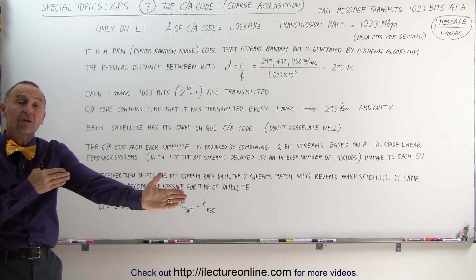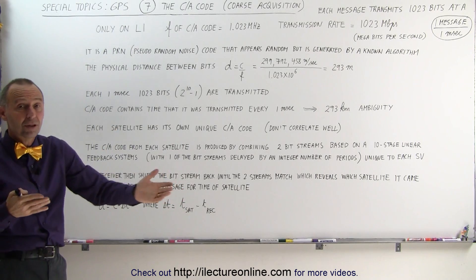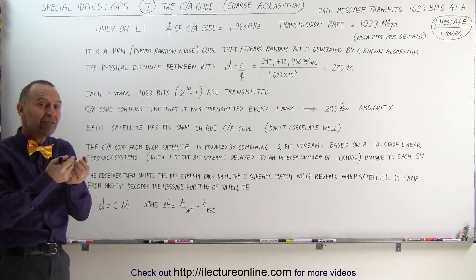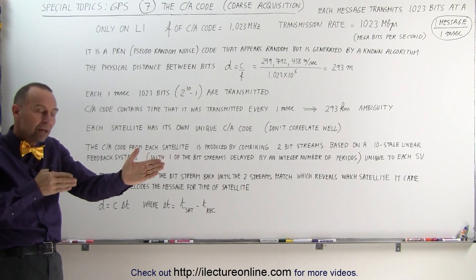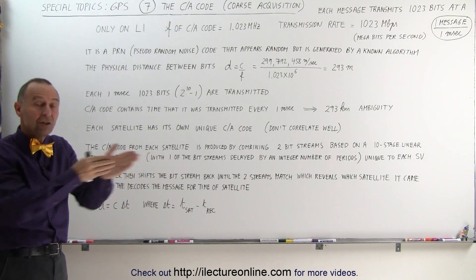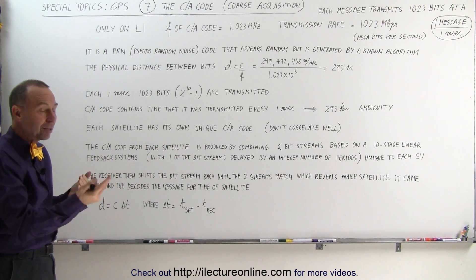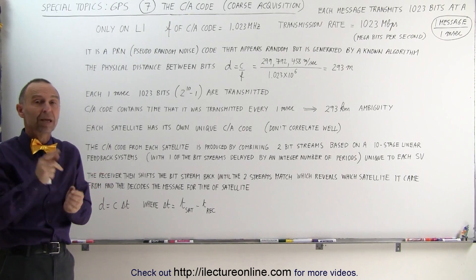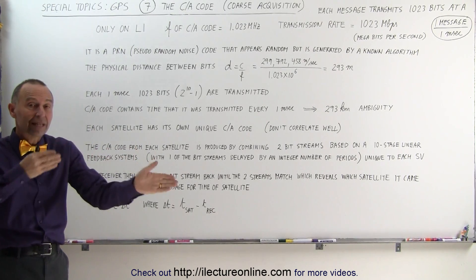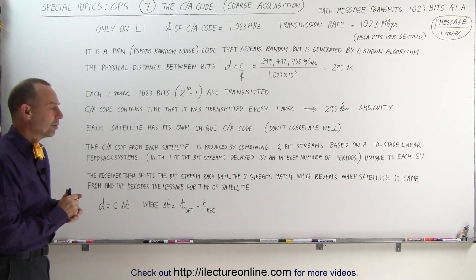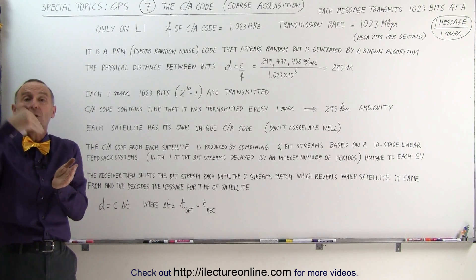So we have two bit streams combined — one is delayed — and you lay one on top of the other and at that point it looks like random noise. But then when the receiver receives that bit code stream, it starts shifting that back one unit at a time until the two match. When it sees how many units apart it was — what the delay was on the second bit stream compared to the first — it will know what satellite it came from, because each satellite delays it by a specific number of integer periods.